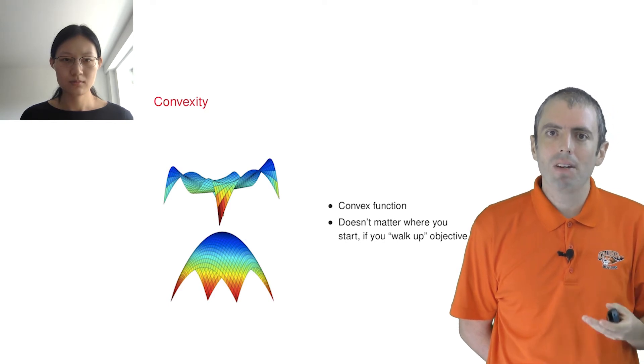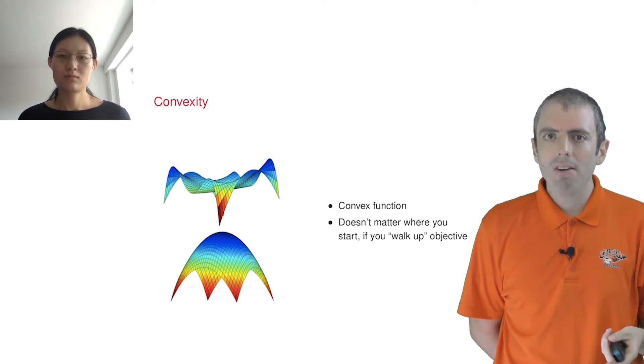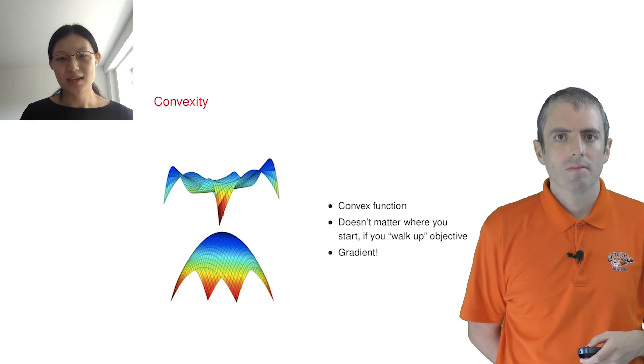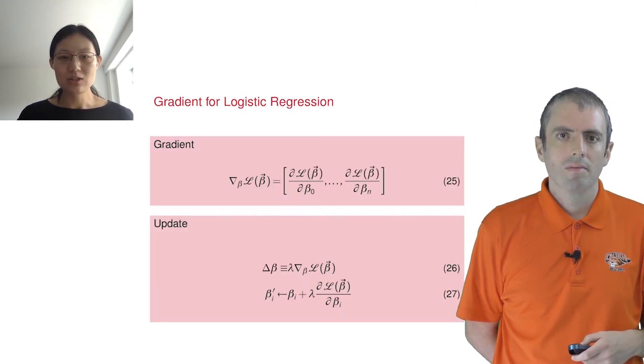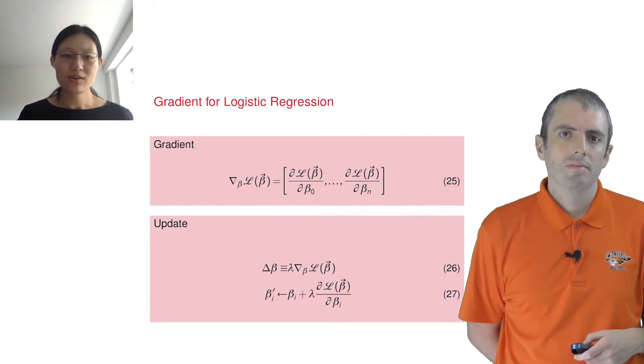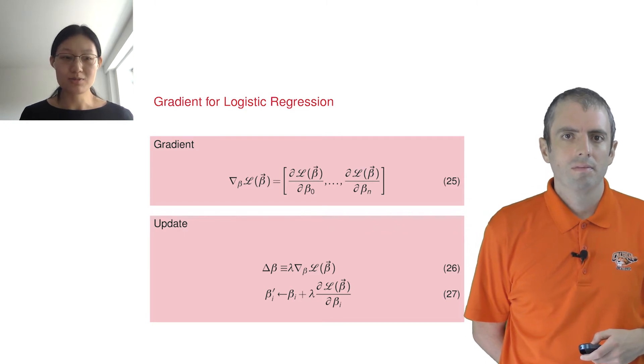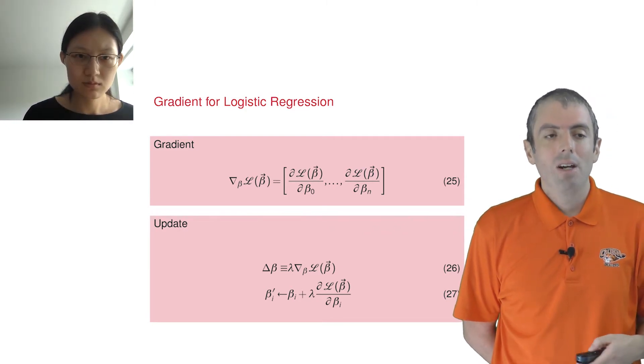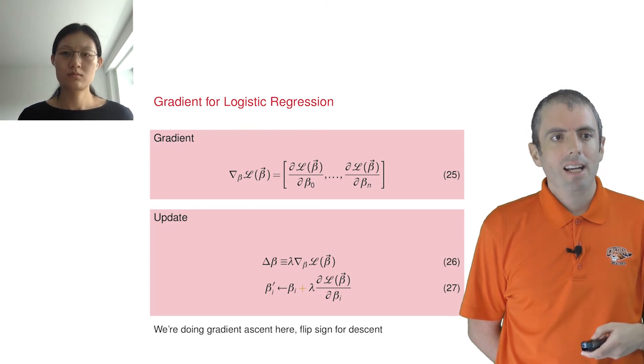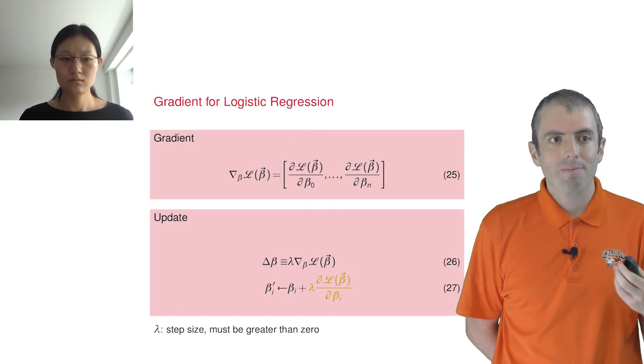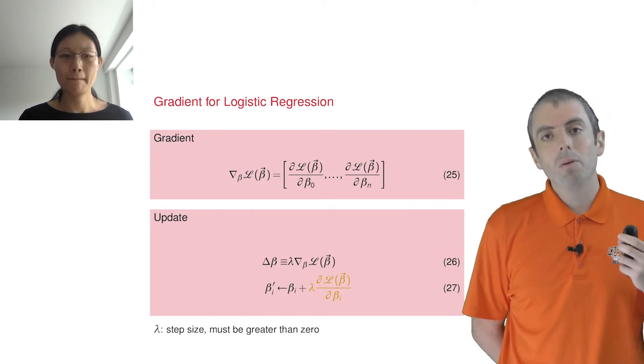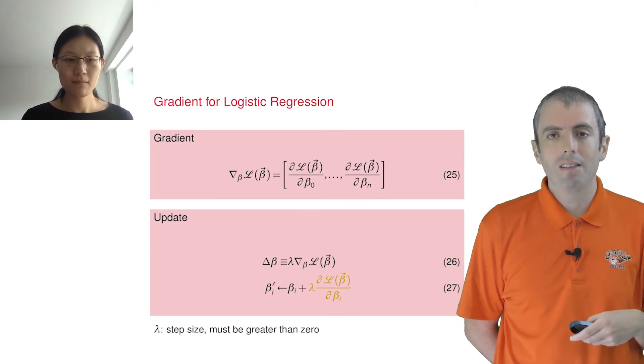We talked about optimization generally before, but how does it apply here? We start with some random setting of weights beta. You evaluate the gradient and update the weights. We repeat that until the weights stop changing, and each time the objective keeps going up. The gradient points you in the direction to improve the objective function. So let's go through the math. We have some setting of the betas. We're going to tweak the betas just a little bit by adding in the gradient multiplied by some step function lambda. This will move the betas by just a little bit to improve the objective function little by little.